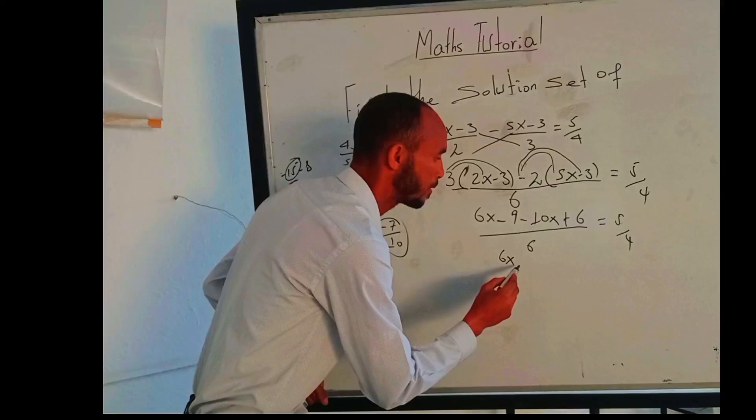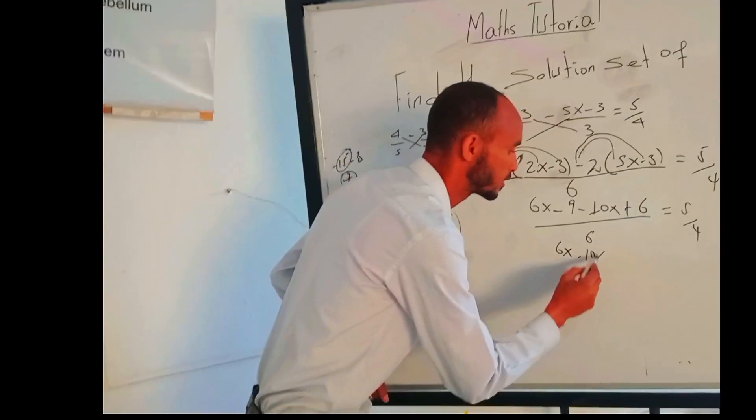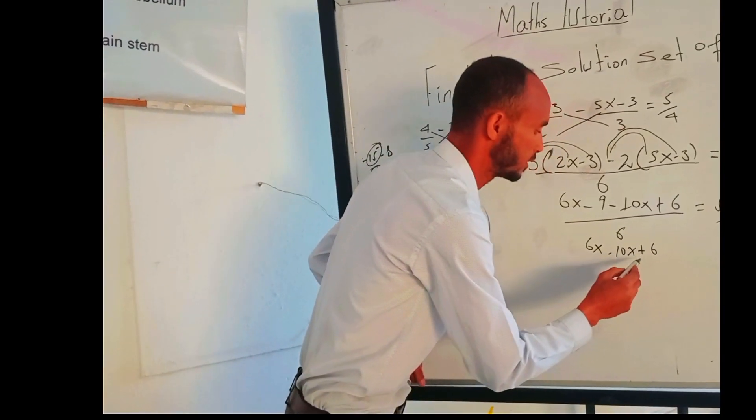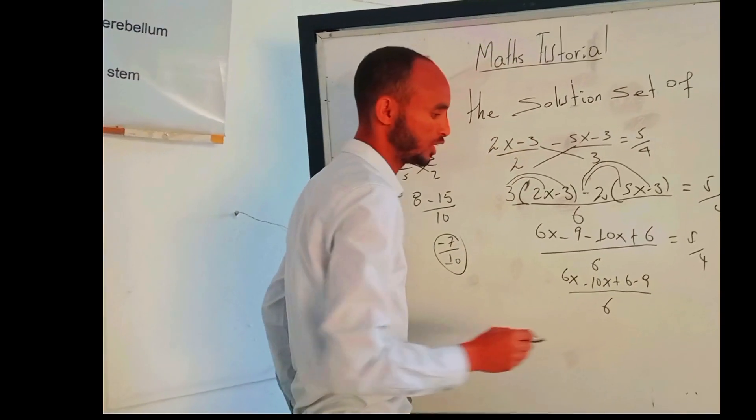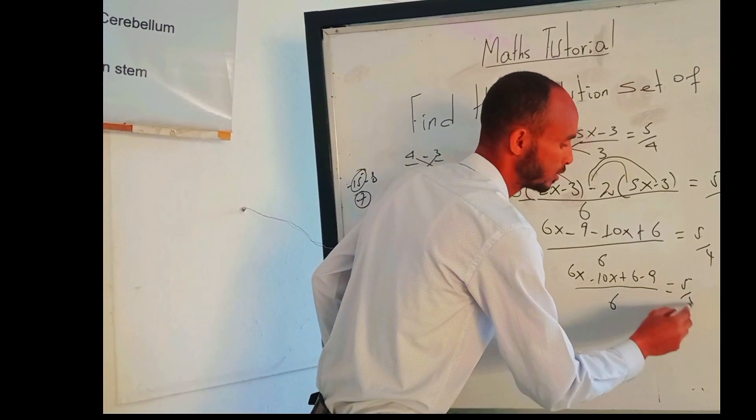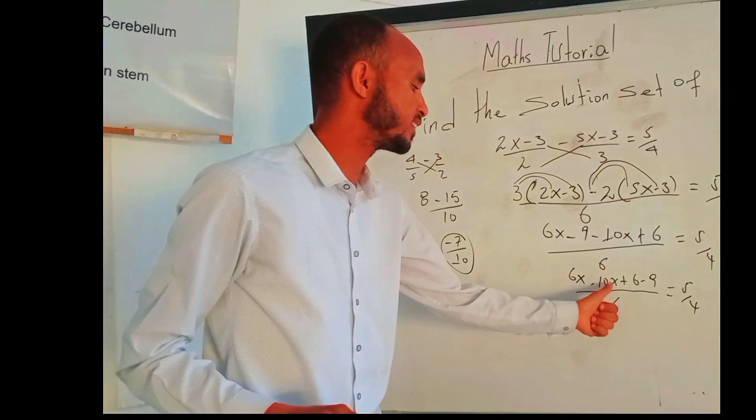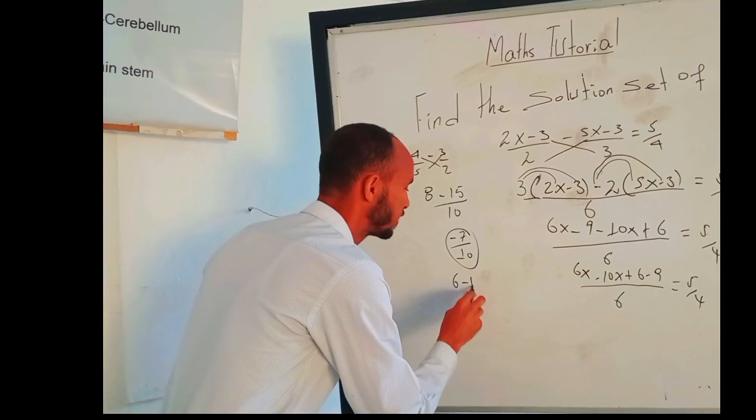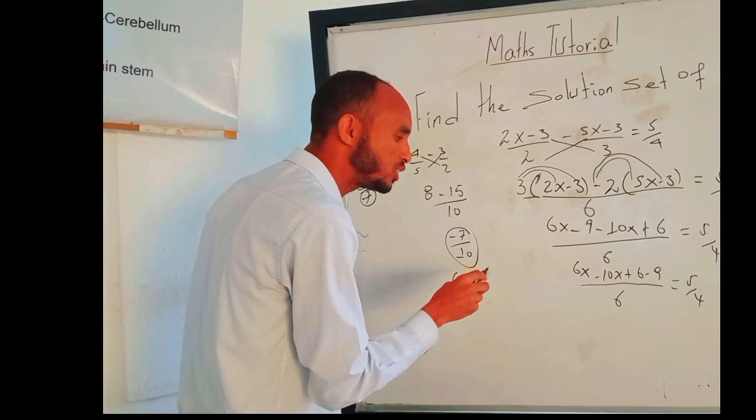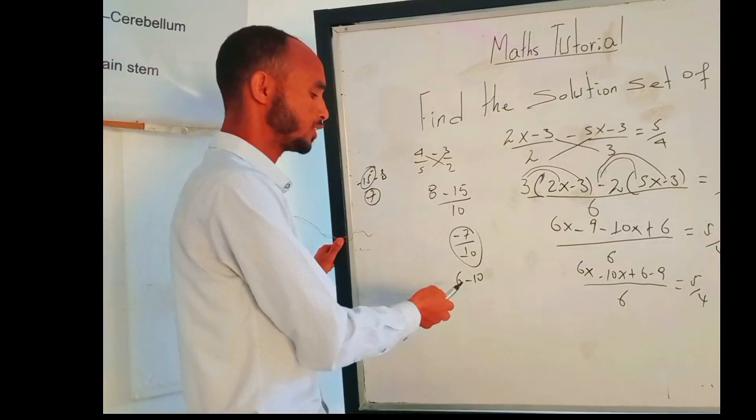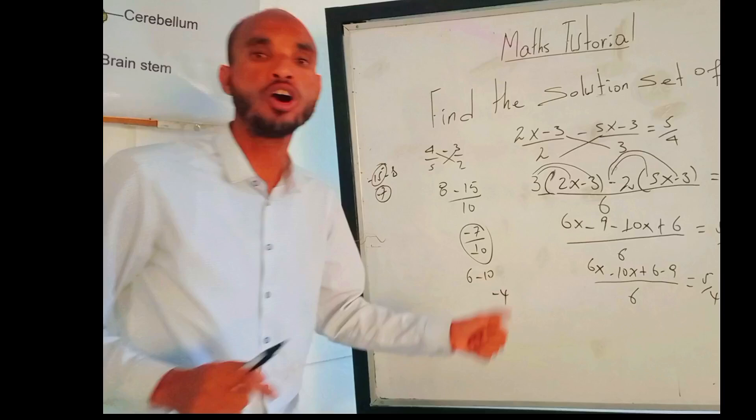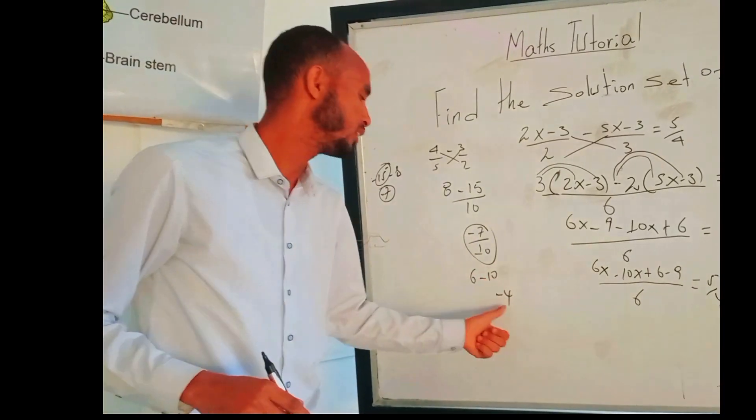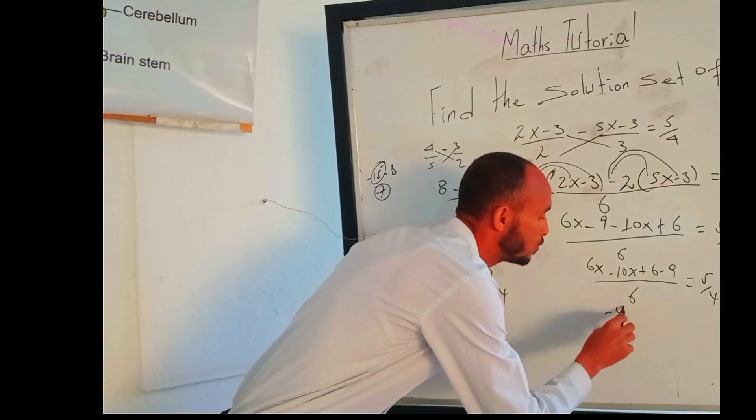Now collect like terms: 6x minus 10x plus 6 minus 9, the whole over 6 gives us 5/4. 6 minus 10 means negative 4, because 10 minus 6 is 4, so negative 4x.